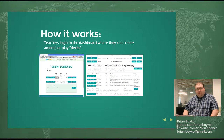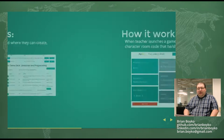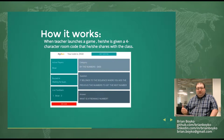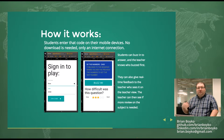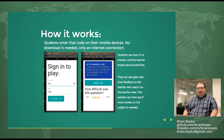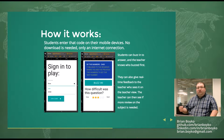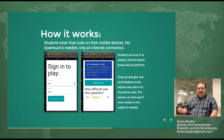Here's how it works. Teachers log in to the dashboard where they can create, amend, or play decks. When the teacher launches a game, they're given a four-digit character room code, which they share with the class. Students then enter that code on their mobile devices or laptops — no downloads needed. You just need an internet connection because we've designed the student view to be responsive. Students can buzz in to answer, and the teacher knows who buzzed in first, who buzzed in second, etc. They can also give real-time feedback to the teacher, and the teacher can see it in their view.